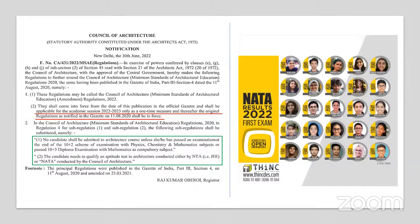In this year's NATA official brochure, they mentioned the previous eligibility condition: in order to get admission in BArch courses, a candidate should need 50% aggregate in Physics, Chemistry, and Mathematics, and also 50% aggregate in total in Plus 2. For diploma students as well, they require a 50% aggregate with Mathematics as a compulsory subject.